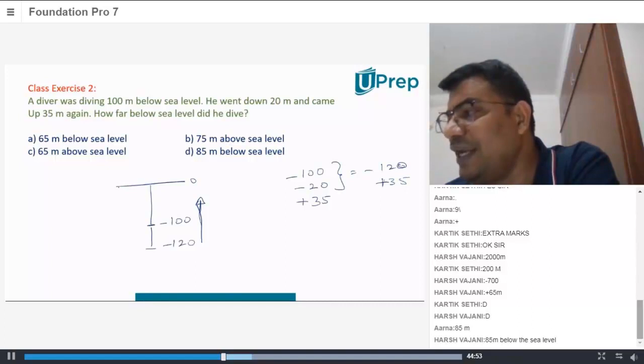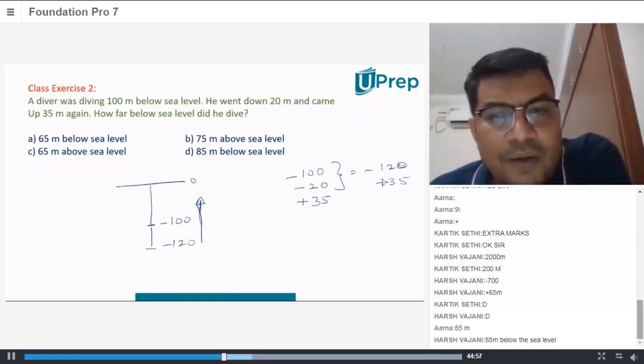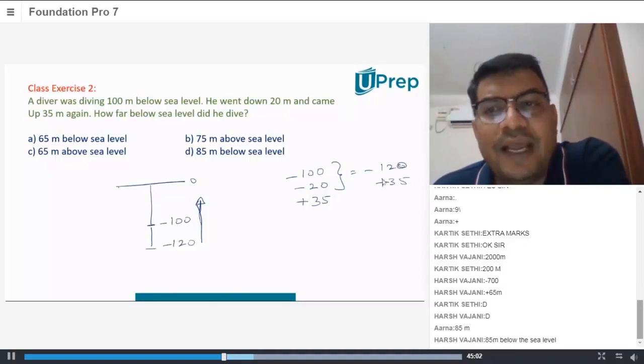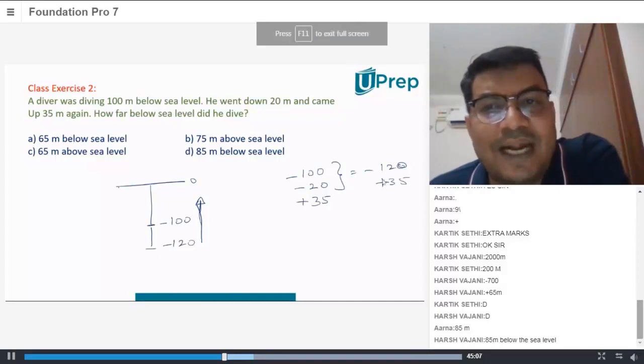Do you know how to add minus 120 and plus 35? What happens if you add minus numbers? They are supposed to be subtracted. Whenever you have opposite signs you have to subtract the numbers.